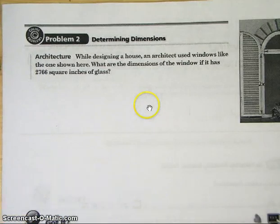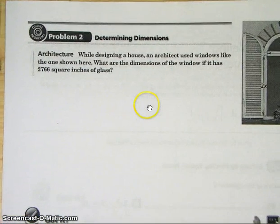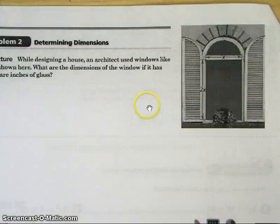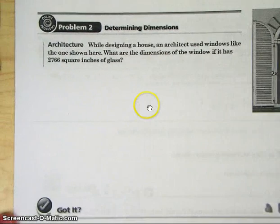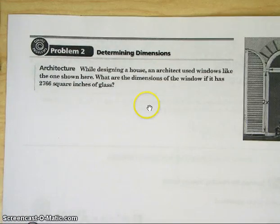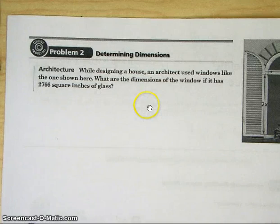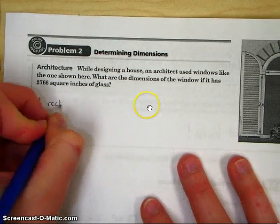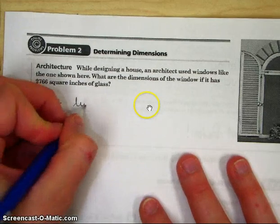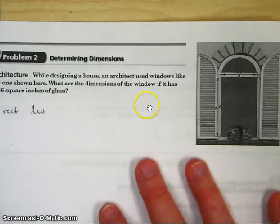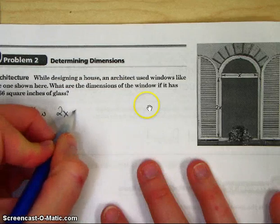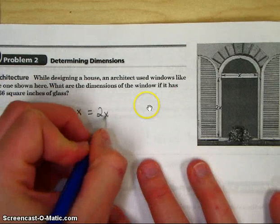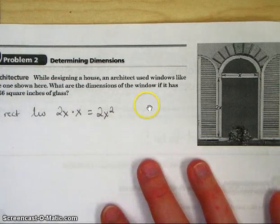Problem 2 will be a little more difficult. While designing a house, an architect uses windows like the one shown here. Notice the window that's a rectangle with the semicircle on the top. Now, what are the dimensions of the window if it has 2,766 square inches of glass total? Well, here we go. You have to be able to first find the area of the rectangle. So write area, rec for area of rectangle. You know that's length times width. Look at the picture. That's going to be 2x times x because that's what it's labeled here. That makes 2x squared.